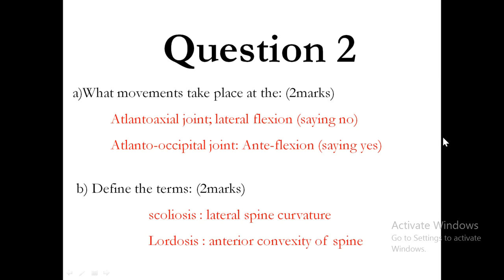Define the term scoliosis. This is a lateral spinal curvature, and it is an abnormal one. Lordosis is an anterior convexity of the spine, which is normal — it only becomes abnormal when it is exaggerated lordosis.